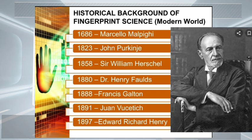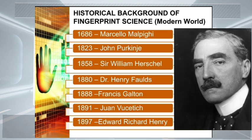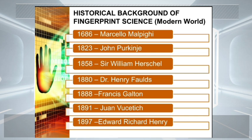While in 1891, Vucetich created a fingerprint classification system in Argentina. In 1897, Sir Edward Richard Henry created another fingerprint classification system in England. The details of these contributions made by these personalities will be discussed in detail later on.